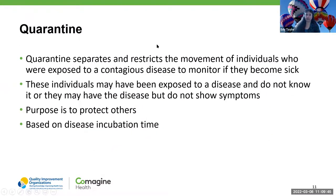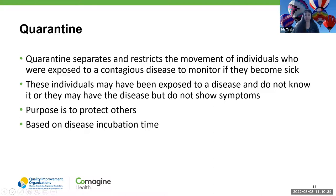Quarantining separates and restricts the movement of individuals who are exposed to a contagious disease to monitor if they've become sick. They're not sick yet, but they've been exposed. These individuals may have been exposed to disease and do not know it — they have the disease but do not show symptoms. The purpose is to protect others, especially those with comorbidities at greater risk. It's also based on disease incubation time. Keep an eye out for changing guidelines when it comes to quarantining, as we know those guidelines throughout the pandemic have changed.